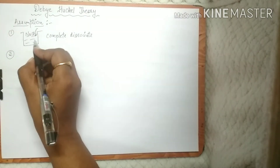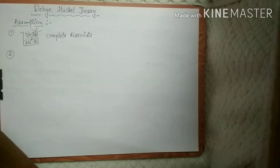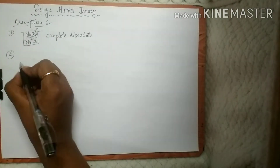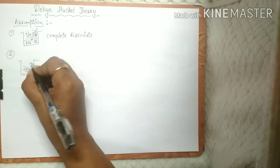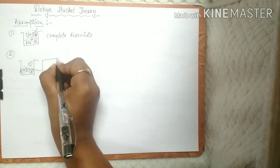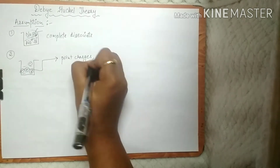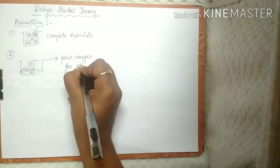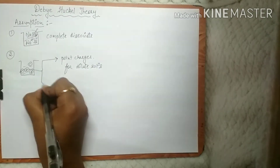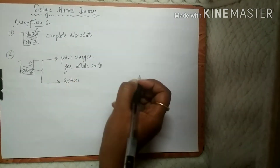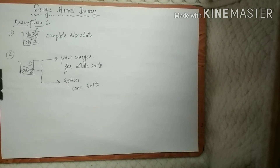The second assumption is that you will be having the ions of this strong electrolyte in the solution — for example, Na⁺ and Cl⁻ ions. The positive and negative ions which are present in the solution will be considered as point charges for dilute solutions, and they will be considered as a sphere of charge in the case of concentrated solutions. This is the second assumption.